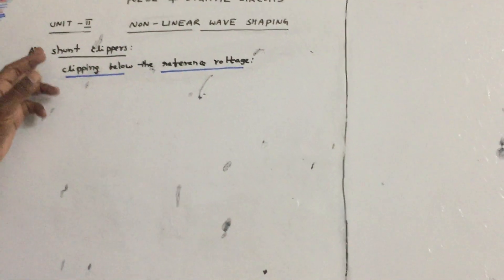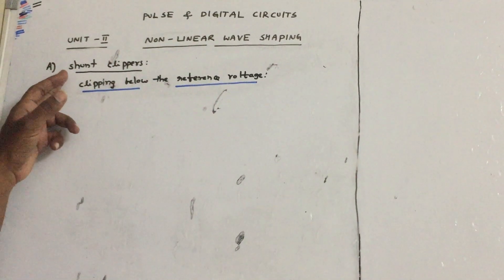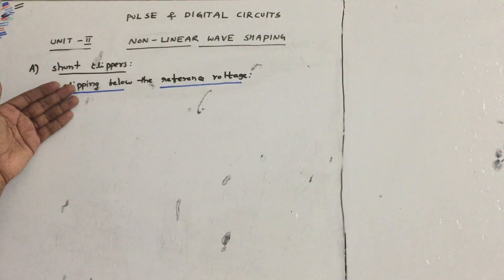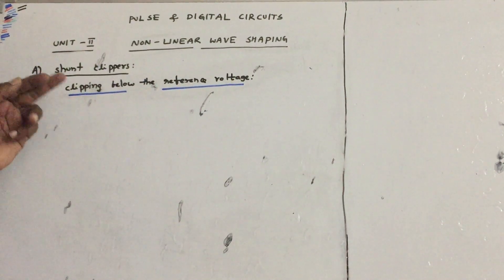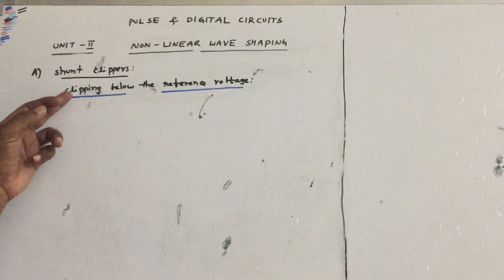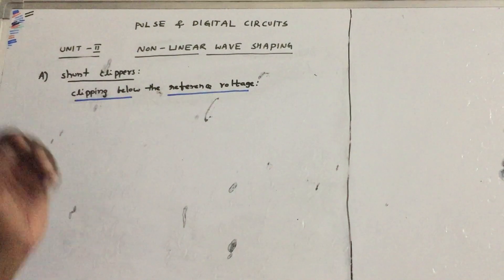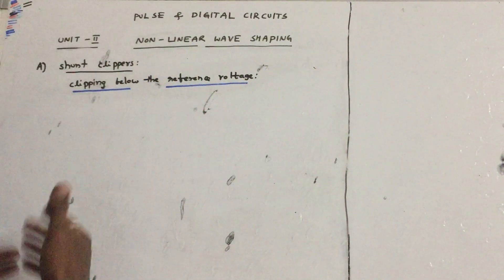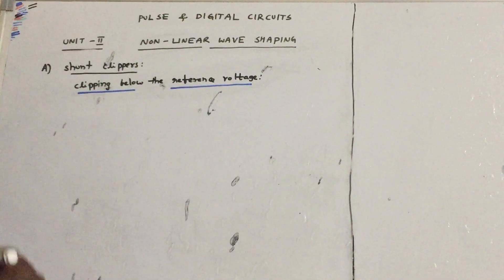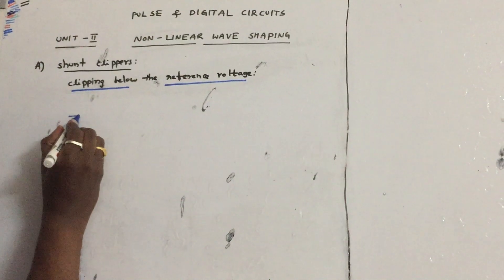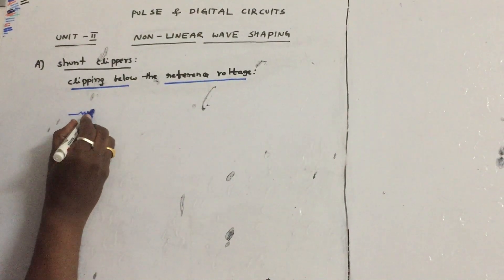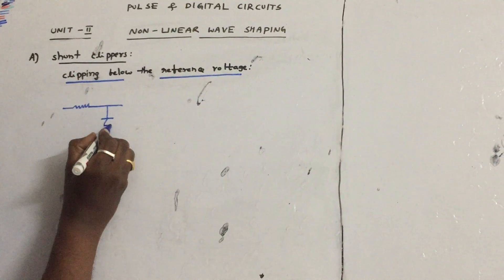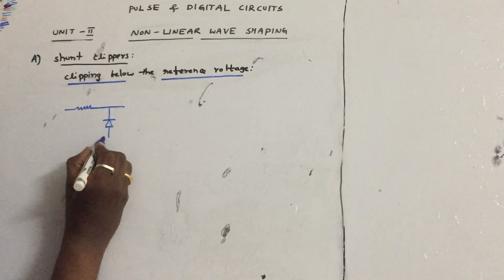In the previous class we discussed shunt clippers clipping above the reference voltage. Now in this session we will see shunt clippers clipping below the reference voltage. Let us see the slight change in the circuit. The circuit is very simple — it consists of a resistor, just to reverse the diode from the previous circuit.